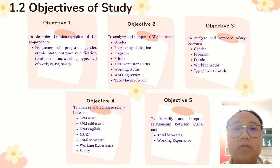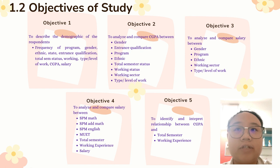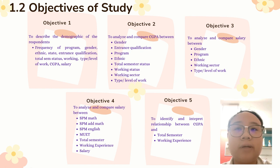Next is the objective of study. In this study, we have five main objectives. Objective one is to describe the demographic of the respondent, which includes the frequency of program, gender, ethnic, state, entrance qualification, total semester status, working status, type or level of work, CGPA, and salary.